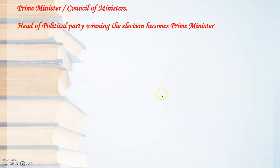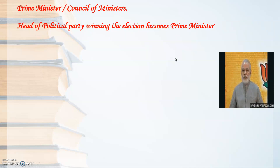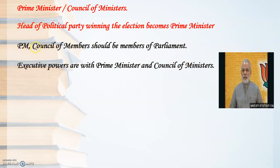Prime Minister and Council of Ministers: The head of the political party winning the elections becomes the Prime Minister. Every five years, elections take place among political parties, and the party which gets maximum votes — the head of that party is appointed as Prime Minister under the guidance of the President. The Prime Minister and Council of Ministers must be members of Parliament. Executive powers are with the Prime Minister and Council of Ministers.